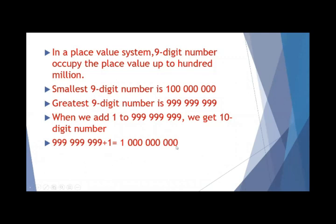One billion has 10 digits: 1, 2, 3, 4, 5, 6, 7, 8, 9, and 10. It also has nine zeros. It means it has nine zeros and the total number of digits is 10.